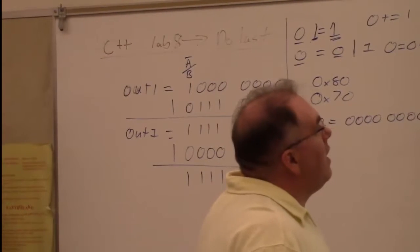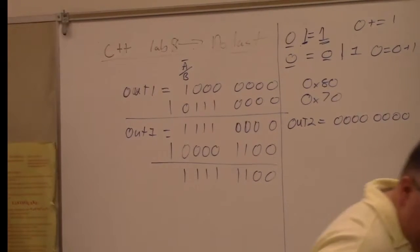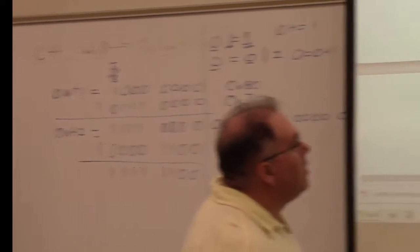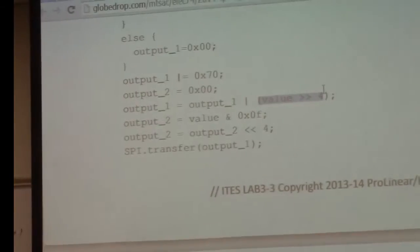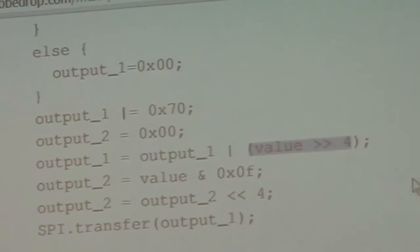And then output 2 is equal to value. So when we do the shift up here, this does not affect the value of value. It just shifts it over and then does the operation. So value is still equal to C3.